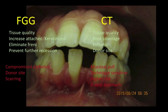So what is the answer? There's no right or wrong. My tendency with these types of situations, especially the lower incisors, is to choose the free gingival graft. I think that predictably we can eliminate the freni, we can improve the tissue quality, prevent further recession, and if it's still a problem, we can always reposition the tissue in a coronal direction to gain some root coverage.